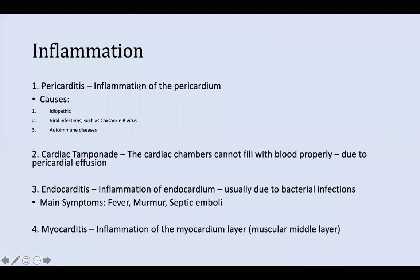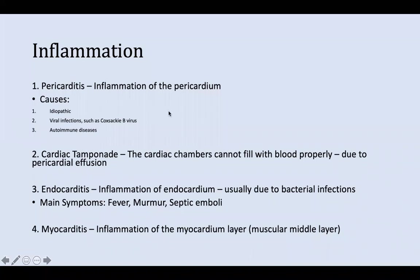In inflammation, there are four types: pericarditis, cardiac tamponade, endocarditis, and myocarditis. Pericarditis is inflammation of the pericardium — causes include idiopathic, viral infection such as Coxsackie B virus, and certain autoimmune diseases. It manifests as sharp retrosternal chest pain that upon inhalation radiates to the neck, shoulders, and back, and is usually much worse when lying on your back.